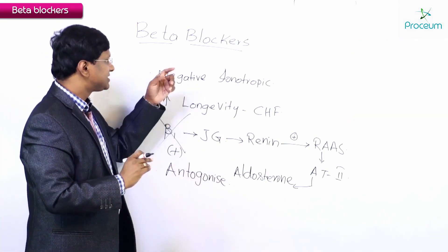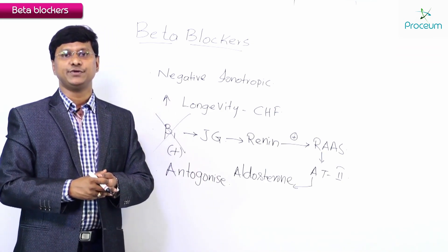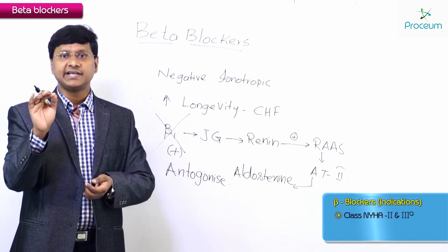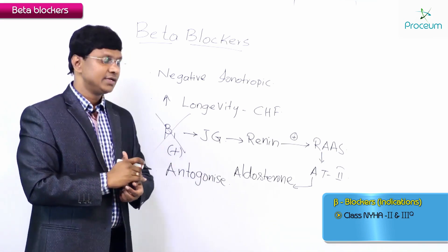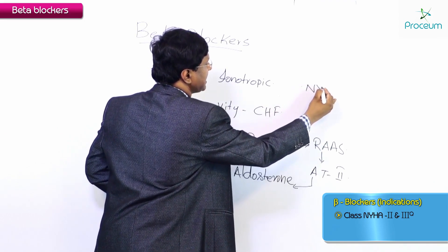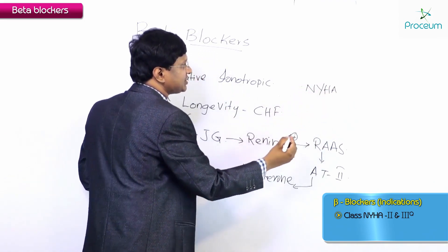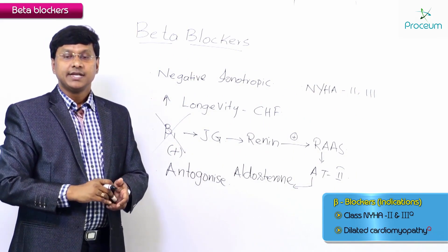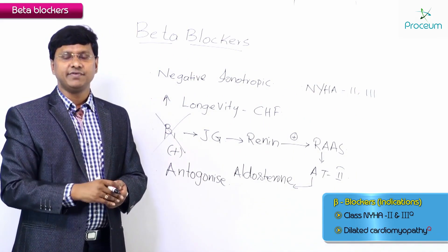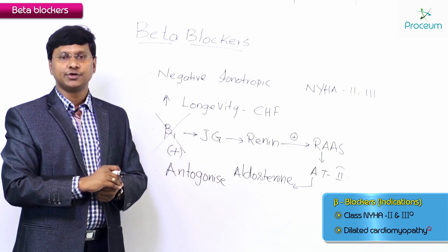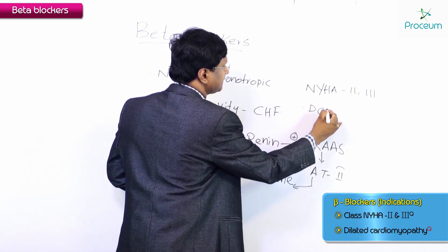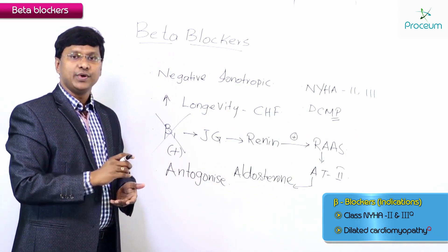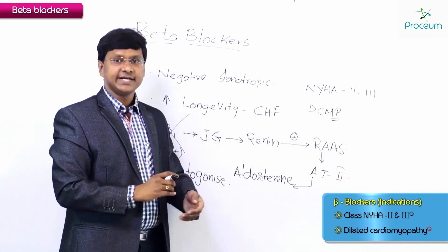In which class of congestive heart failure do we use beta blockers? These drugs are best indicated in patients with NYHA class 2 and class 3. These are also drugs that can be given in patients with heart failure due to dilated cardiomyopathy.